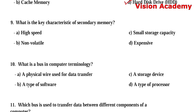Question number 9: What is the key characteristic of secondary memory? Option A: high speed. Option B: non-volatile. Option C: small storage capacity. Option D: expensive. Option B, non-volatile, is the right answer.